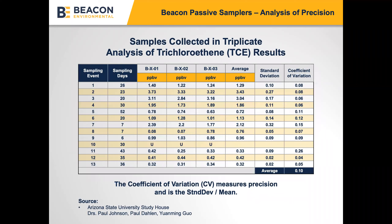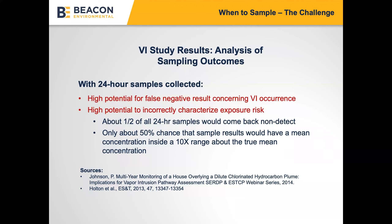Looking at the precision of Beacon passive samplers from triplicate samples across 13 events spanning 6 to 52 sampling days, the coefficient of variation is 0.1 on average — very good quality data, very consistent, high precision, and high repeatability. This is why EPA decided that passive samplers are the ideal method to monitor benzene emissions leaving refineries across the entire U.S., making it a federal requirement. Passive samplers are very robust and capable of providing high-quality data.